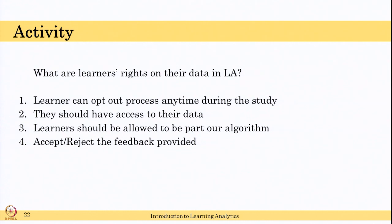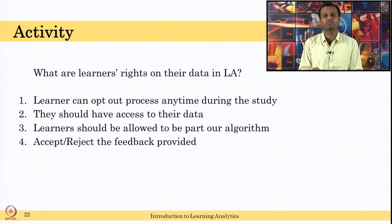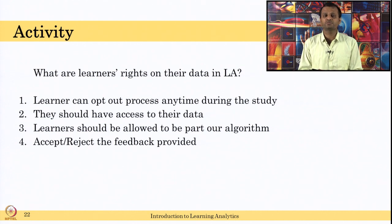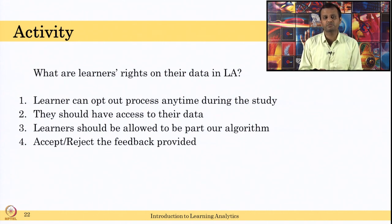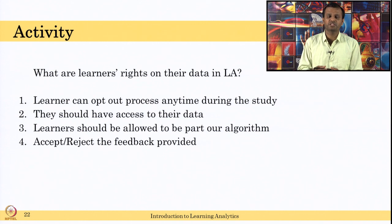The learner's rights in LA are: first, the learner can opt out of the study anytime during the study. Second, they should have access to their data — after completing the study, a learner can ask what data was collected, and you can provide an abstract view even if not all raw biosensor data. Third, the learner should be part of the algorithm — able to give feedback on predictions you made — and that feedback should be used to correct your algorithm. Also, the learner should have the option to accept or reject the feedback or recommendations provided.